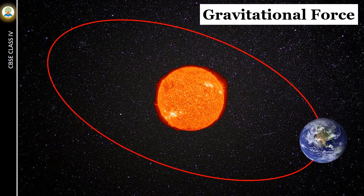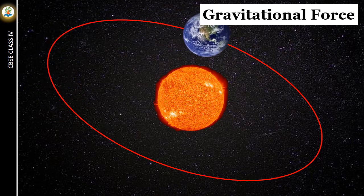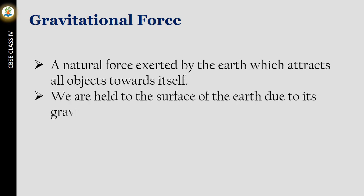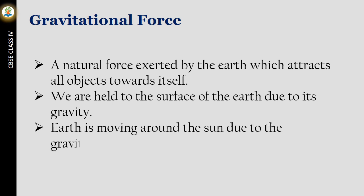Earth is moving around the Sun due to the gravitational pull of the Sun. A natural force exerted by the Earth which attracts all objects towards itself. We are held to the surface of the Earth due to its gravity.